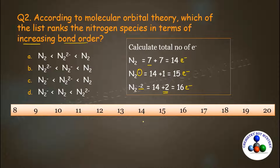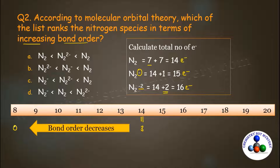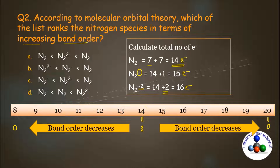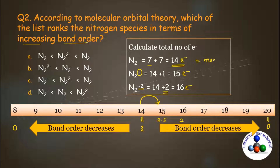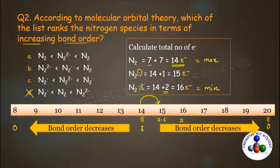Now apply the bond order trick. For 14 electrons bond order equals 3. When you move from 14 to 8, bond order decreases to 0. When you move from 14 to 20, bond order again decreases to 0. For each increase of one electron, bond order decreases by 0.5. So for 15 electrons bond order will be 2.5, and for 16 electrons bond order will be 2. That means N2 has maximum bond order and N2 2- has minimum bond order. Find the option in which N2 2- is given on the least preference — that will be the right option.